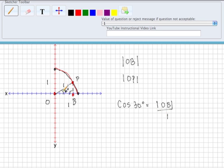The sine of 30 degrees is going to be the opposite side, so PB over the hypotenuse, which is just 1.